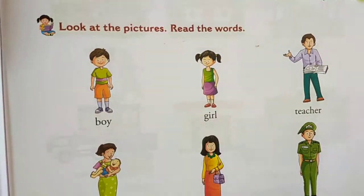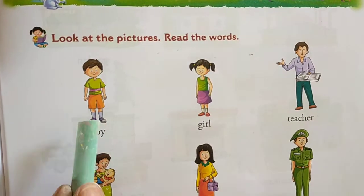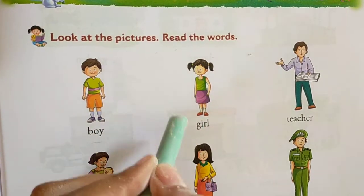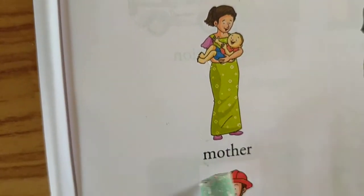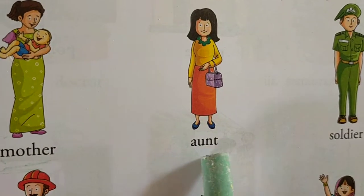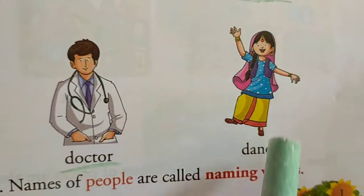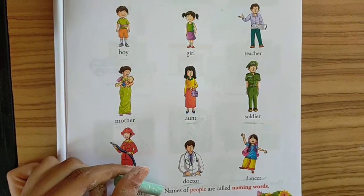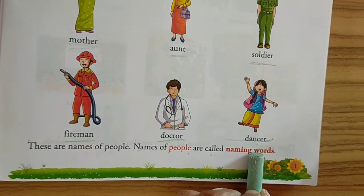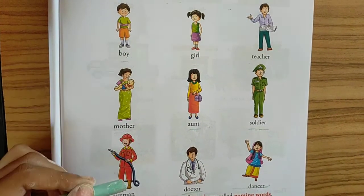Look at the pictures and read the words. What is this? Boy. Who is this? Girl. Teacher. Who is this? Mother. Here is a baby, here is an auntie, here is a soldier, here is a fireman, here is a doctor, here is a dancer. So students, these are the names of people. Names of people are called naming words.